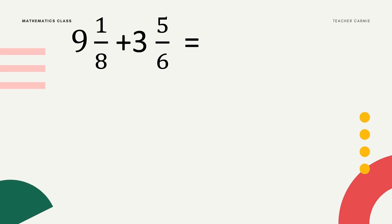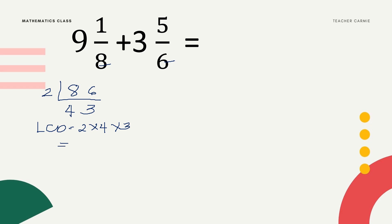Next example: 9 and 1/8 plus 3 and 5/6. Since this is a dissimilar fraction, we will find the LCD of 8 and 6 using continuous division. Both are divisible by 2: 8 divided by 2 is 4, and 6 divided by 2 is 3. Since 4 and 3 cannot be divided further, we multiply the outside numbers: 2 times 4 times 3 — that's 8 times 3 equals 24.